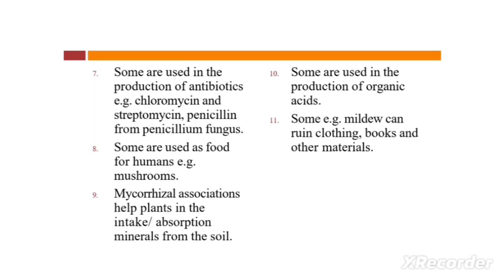Number eight: some are used as a source of food for humans — for example, mushroom. Number nine: mycorrhizal associations help plants in the absorption of minerals from the soil. Number ten: some are used in the production of organic acids.